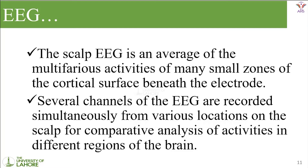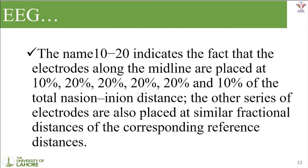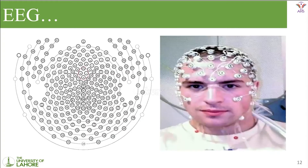We can do that by comparative analysis of the activities obtained. The electrode placement of a traditional EEG, which we can see in any scientific lab where different signal conditioning or thought processes are studied, follows the 10-20 system ratio.